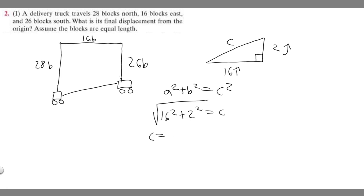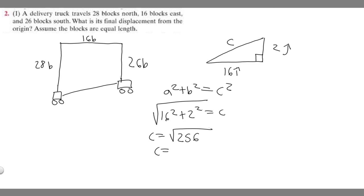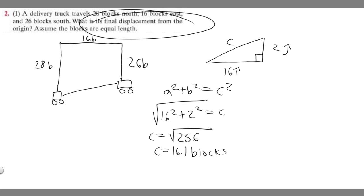So c equals the square root of 16 squared plus 2 squared, which is going to be 256. If you plug this into your calculator, you're going to get that c equals 16.1245. I'm just going to round to the tenth place, so just 16.1 blocks. So the displacement is 16.1 blocks.